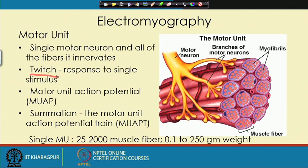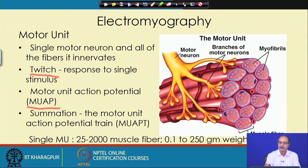For a single motor neuron, it is not connected to one muscle fibre but to a number of them, so we call that collection of all those fibres together as a motor unit. The action potential generated by that we call as motor unit action potential — that is, the signal given by a motor neuron stimulates the muscle fibres connected to it, and the combined potential of all those muscle fibres is the motor unit action potential.